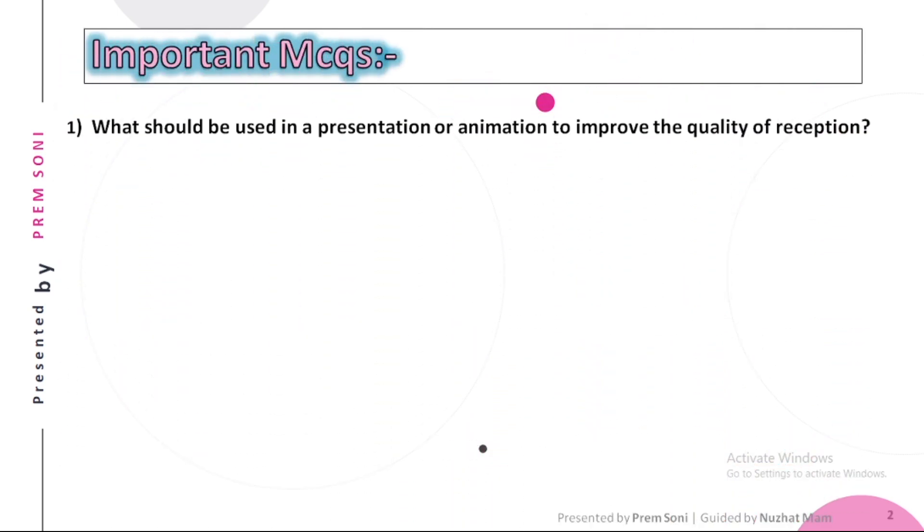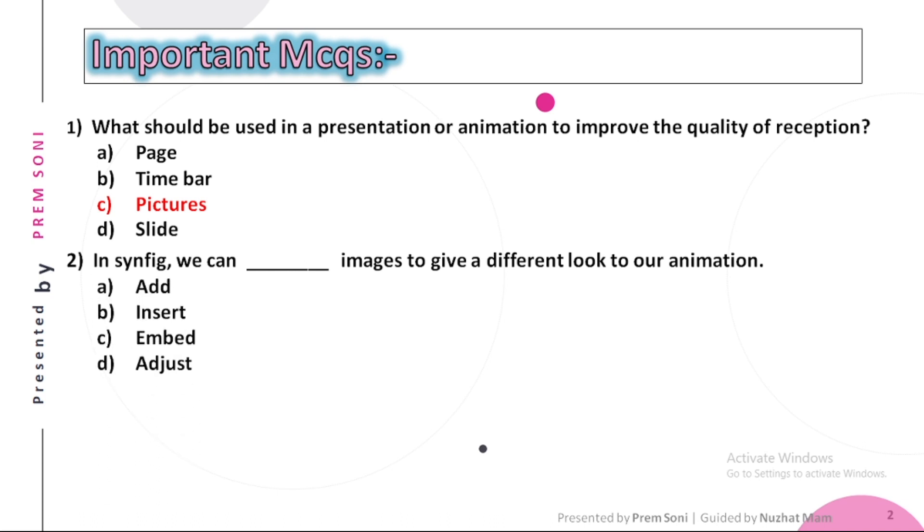First, what should be used in a presentation or animation to improve the quality of reception? Options are: a. Page, b. Timebar, c. Pictures, d. Slide. The answer is Pictures. Second, in Synfig, we can dash images to give a different look to our animation. Options are: a. Add, b. Insert, c. Embed, d. Adjust. The answer is Insert.